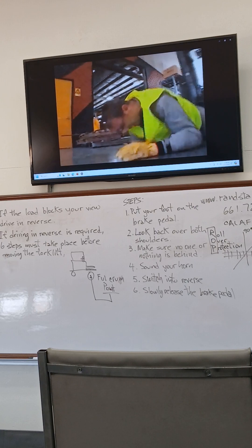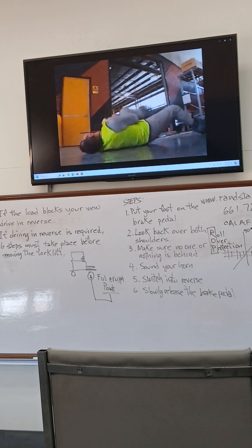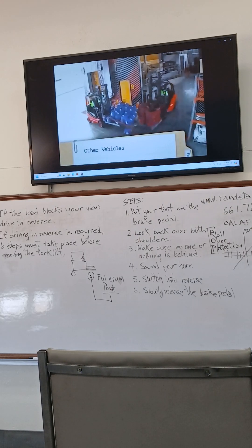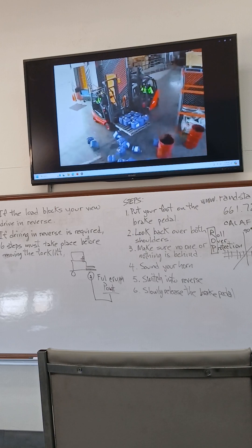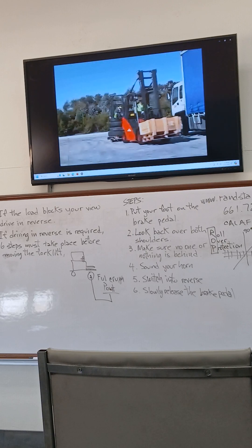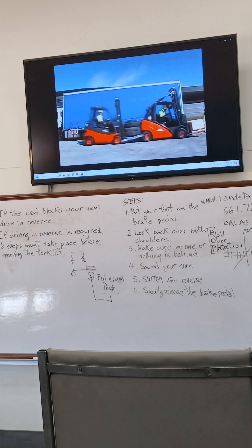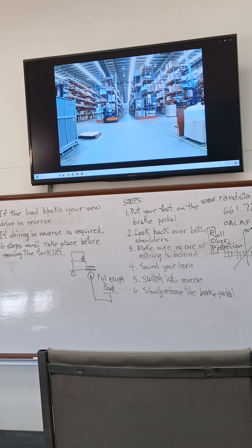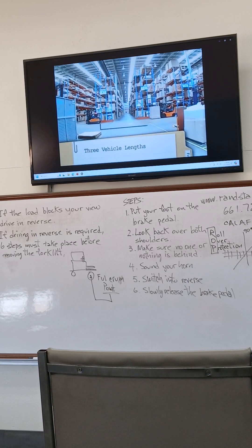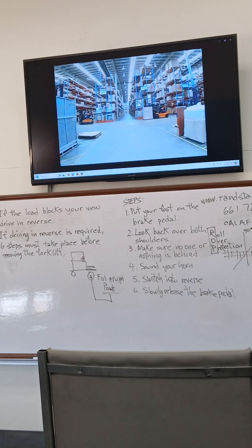Passengers must never be carried on the forklift. Accidents also occur from collisions between forklifts and other mobile plant. Never tailgate another vehicle. Keep at least three vehicle lengths behind traffic in front of you.